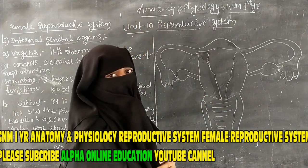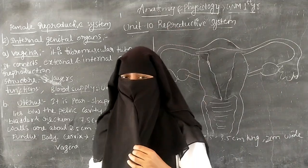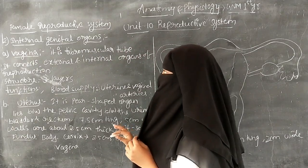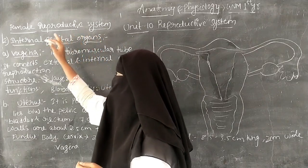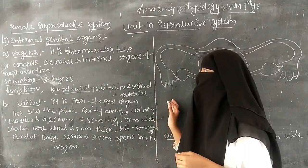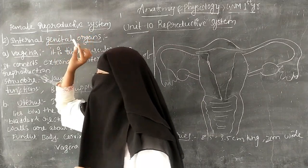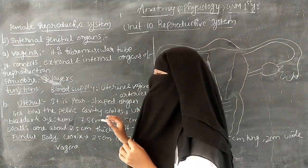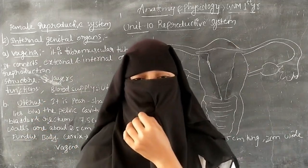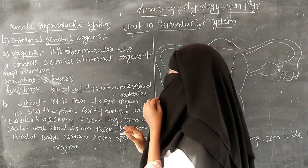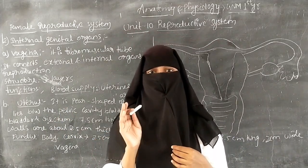Today I am going to discuss about the anatomy and physiology for the GNM first years. We are going to discuss Unit 10, that is the reproductive system. In the last class we covered the external genital organs of the female reproductive system. Now we are going to discuss the internal genital organs. The internal genital organs include the vagina, uterus, two fallopian tubes, and two ovaries.